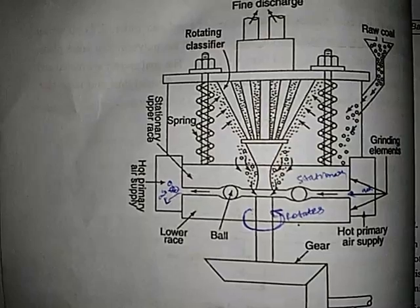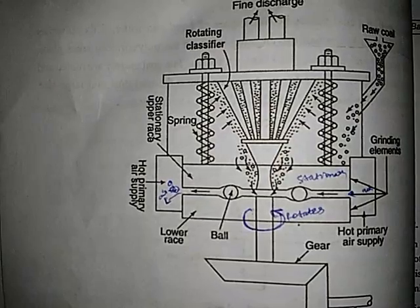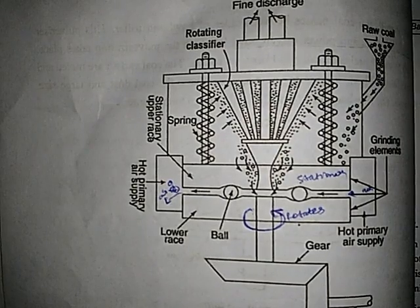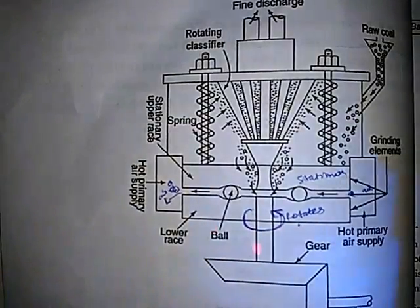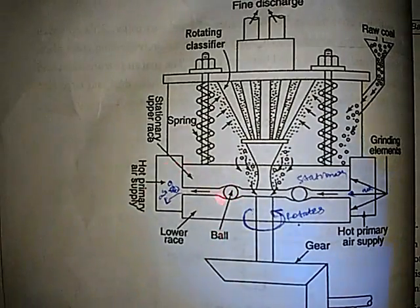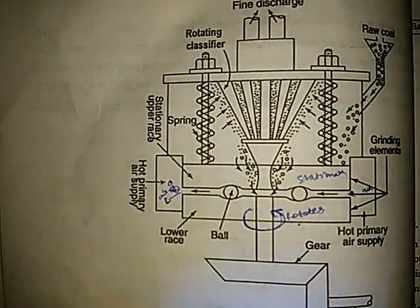This is a ball and mill pulverizer. This diagram belongs to ball and mill pulverizer. Here the coal is crushed in between these two gaps. I will first explain the structure of this ball and mill pulverizer.